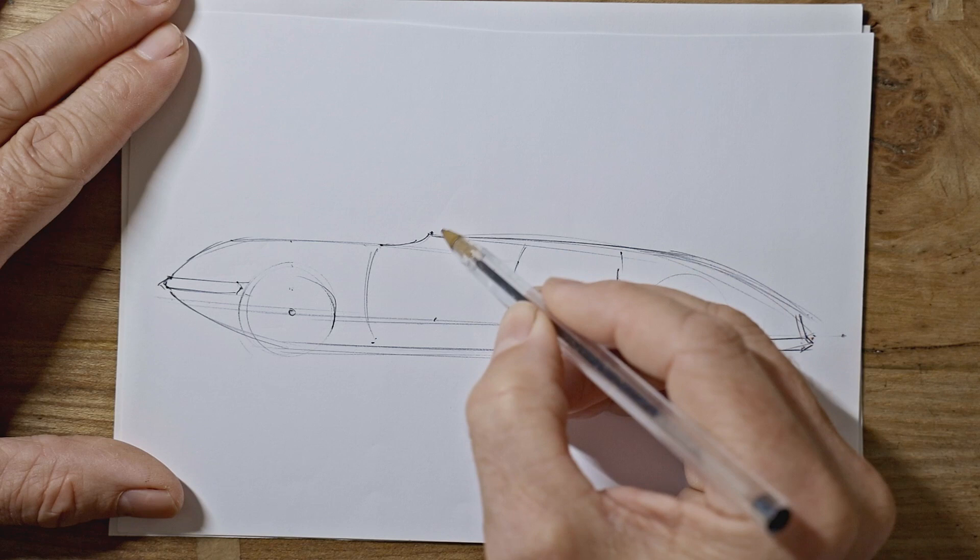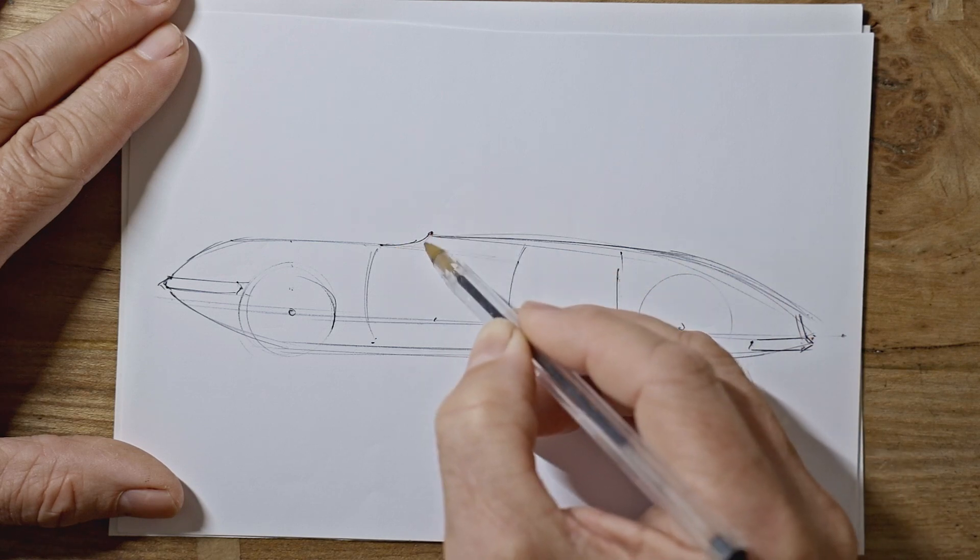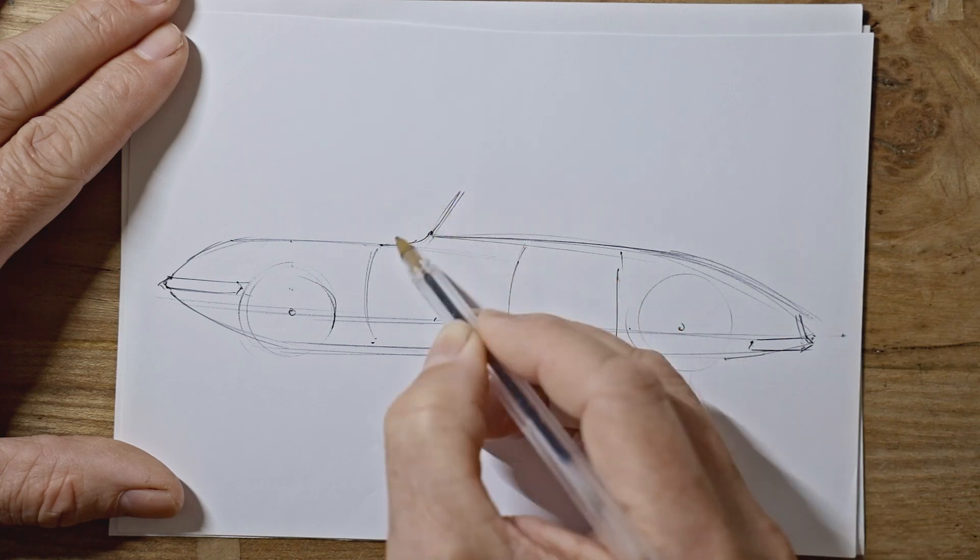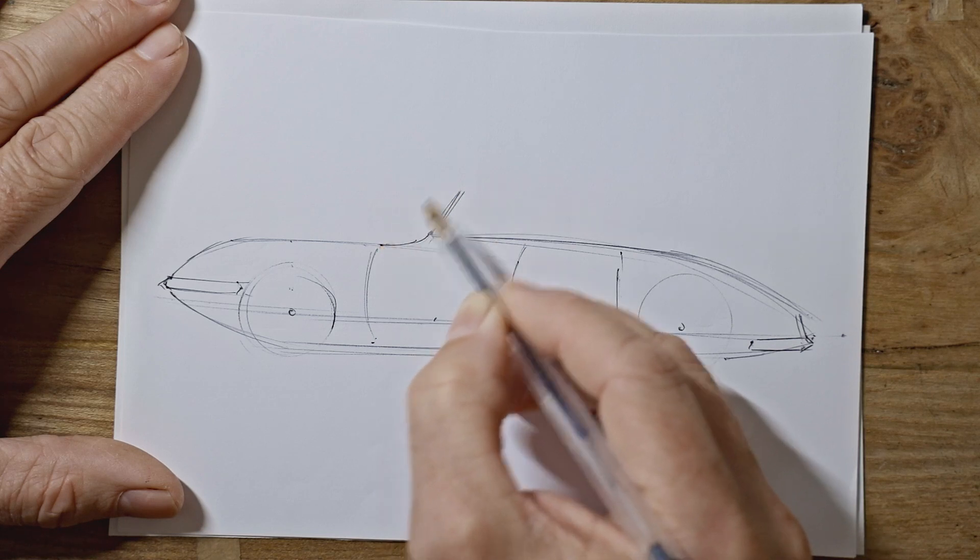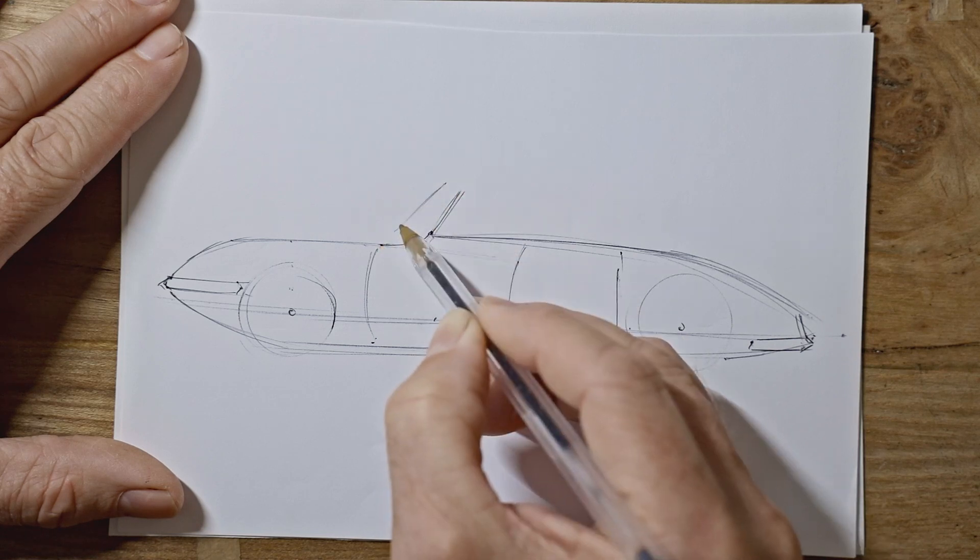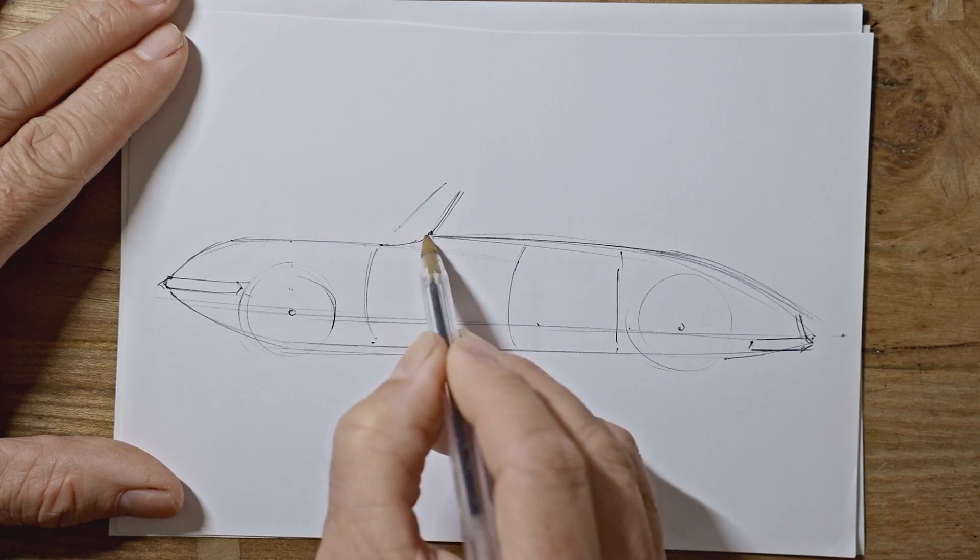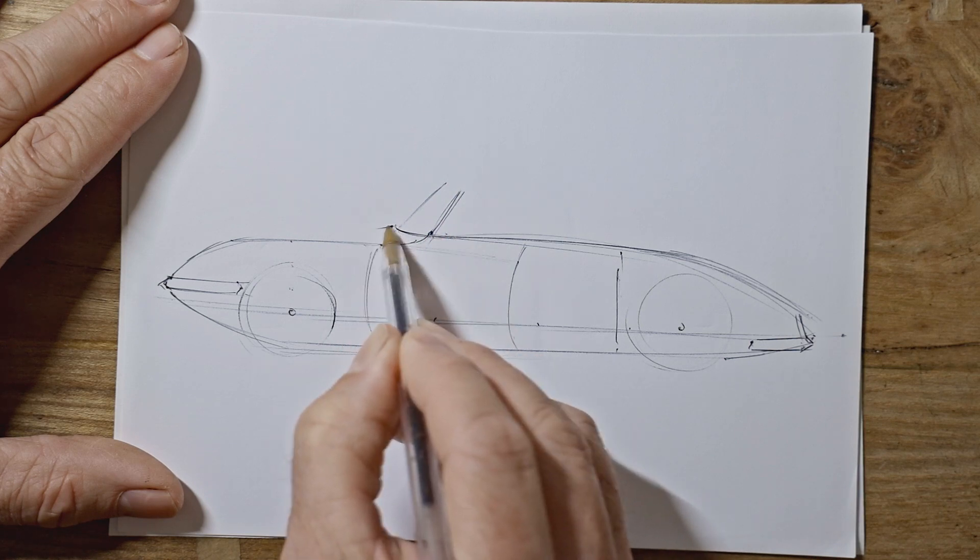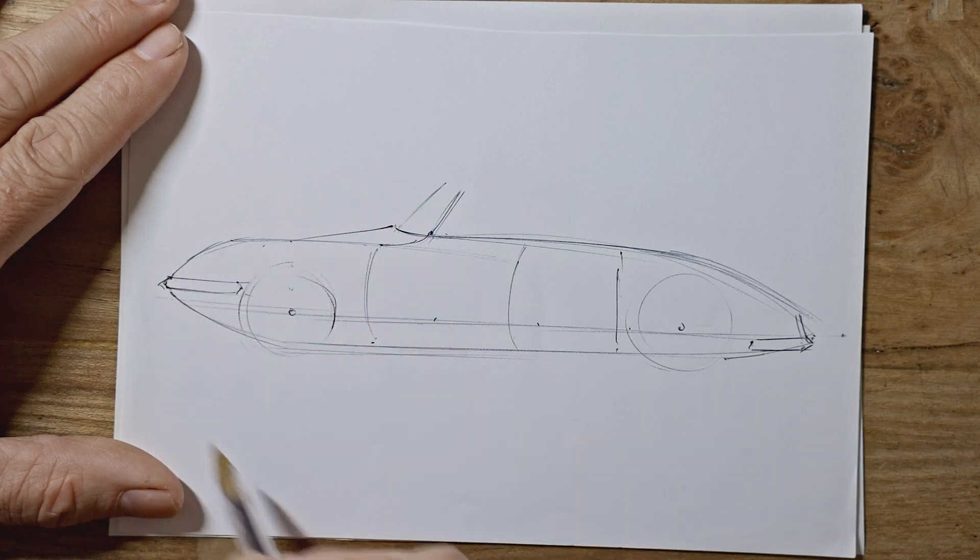Now we can do our pillars for the windows. So the windscreen pillar comes out of this hockey stick shape, quite sloping. And the front edge of the screen points at this point here. It doesn't come as far down as that, but that's where it's heading to. But the bottom edge of your windscreen comes out there. So a little curve. And then you can show your bonnet heading down behind your front wing.